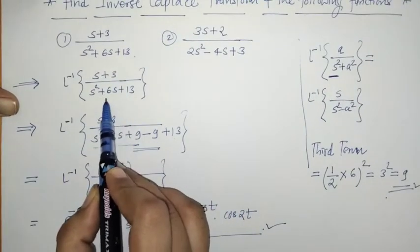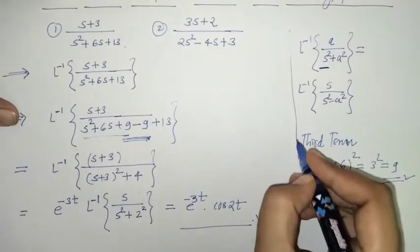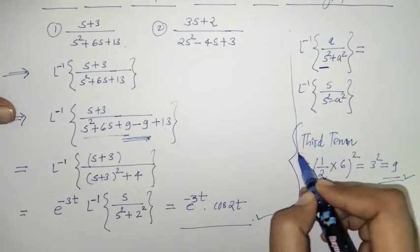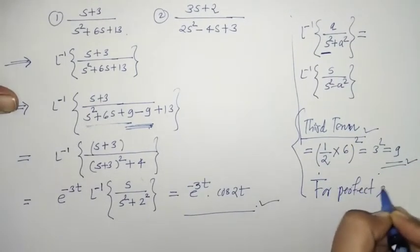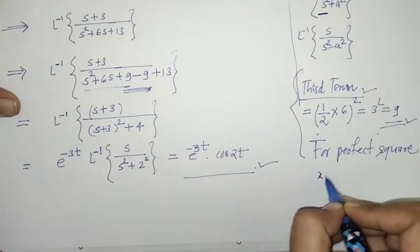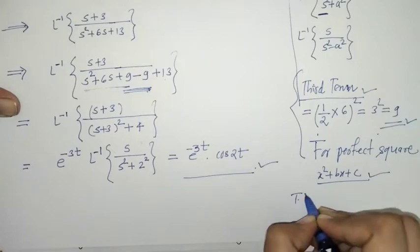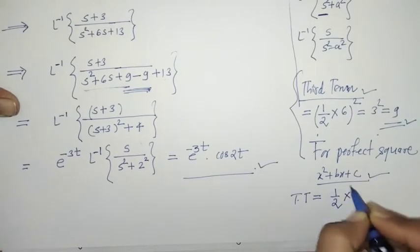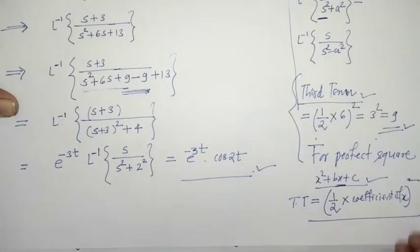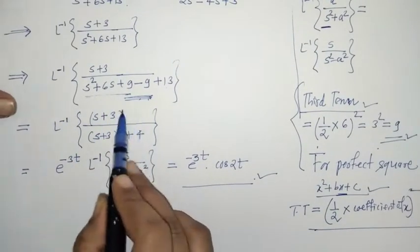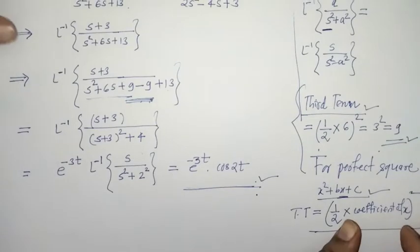What we have done here: in the denominator we made the quadratic factor a perfect square by adjusting the third term. We know how to calculate this third term using the formula: third term = (1/2 × coefficient of x)². By using this, we adjusted the expression and then applied the first shifting property to get the required inverse Laplace transform.